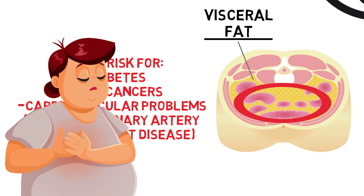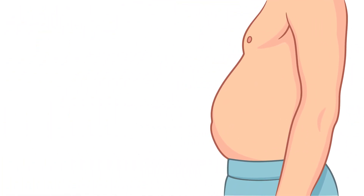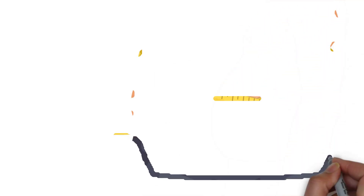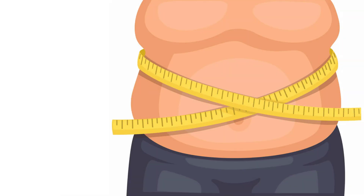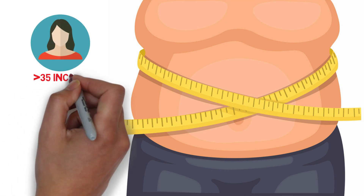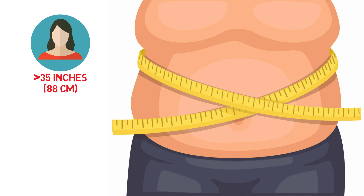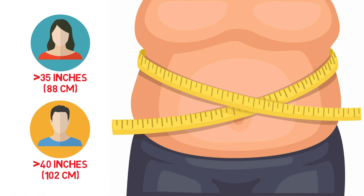A common misconception is that you need to be obese to have excess visceral fat, but even people who seem fit could have harmful amounts. To check if you may have excessive levels, measure your waist circumference: find the bottom of your ribs and the top of your hips, then wrap a tape measure around your waist midway between these points, breathing out naturally and not pulling the tape too tight. In women, a waist circumference of 35 inches (88 cm) or larger is considered a sign of excess visceral fat; in men, it's 40 inches (102 cm).